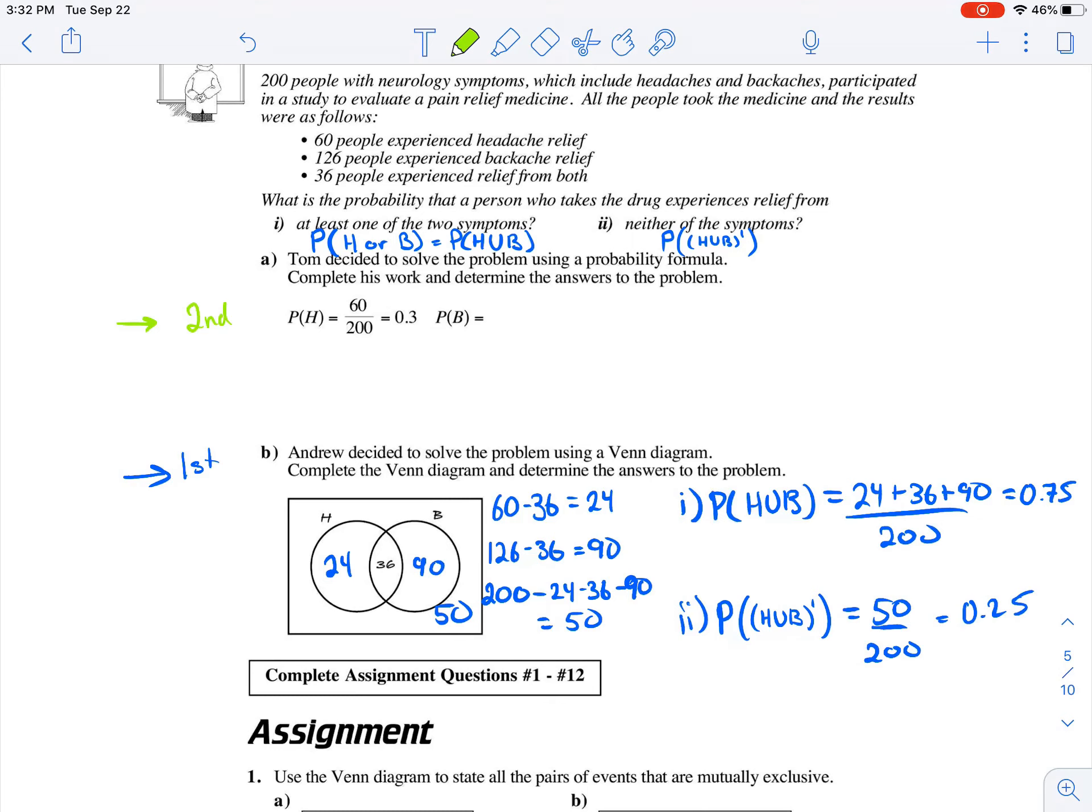The probability that we experience headache relief is 60 over 200, so 0.3. The probability that we experience backache relief was 126 all over 200. Now included in both of those is someone experiencing relief from both. There's 36 people that experienced relief from both. So we'll just continue on with this work.